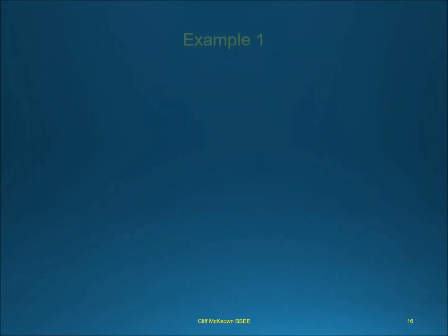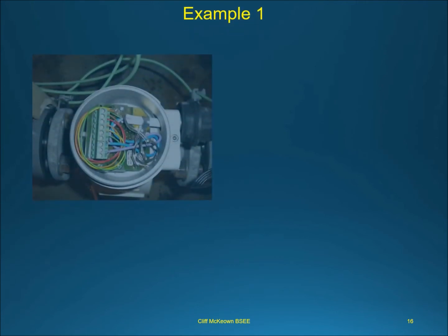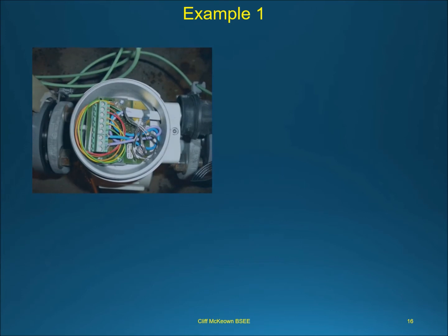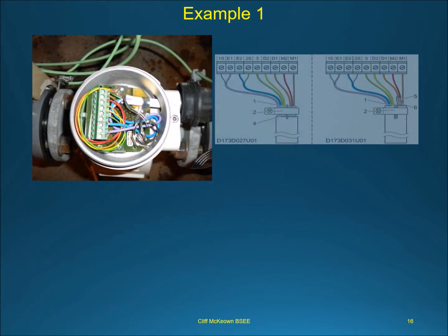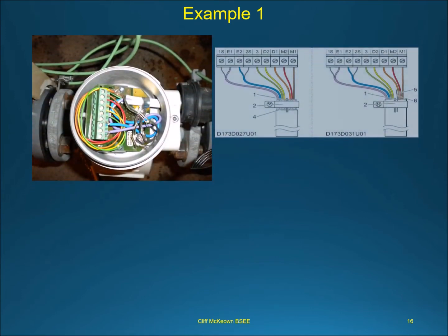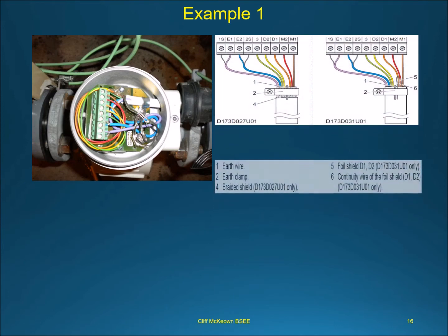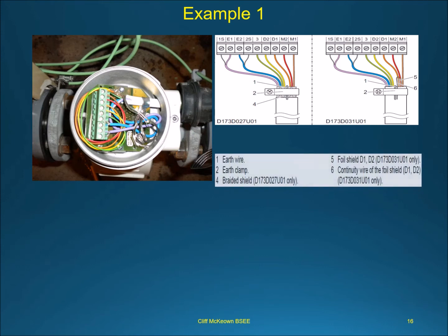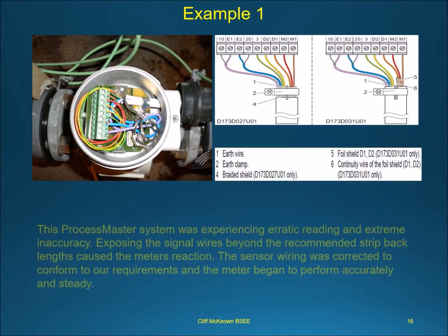Example 1. This Process Master system was experiencing erratic readings and extreme inaccuracy. Exposing the signal wires beyond the recommended strip-back lengths caused the meter's reaction. The sensor wiring was corrected to conform to our requirements and the meter began to perform accurately and steadily.